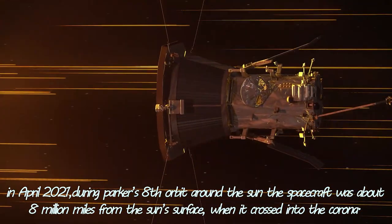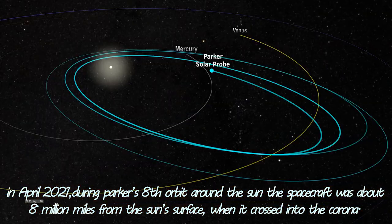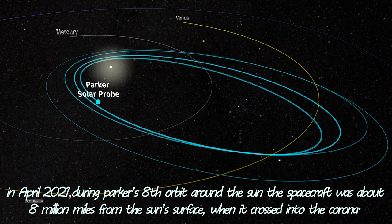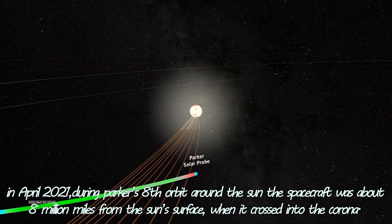Then, in April 2021, during Parker's 8th orbit around the Sun, the spacecraft was about 8 million miles from the Sun's surface when it crossed into the corona.